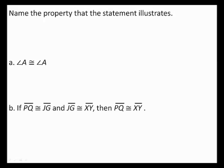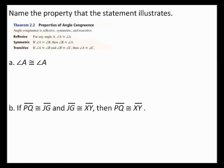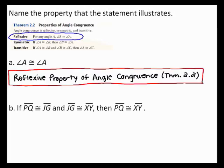In part A, the statement shows that an angle is congruent to itself — in this case, angle A is congruent to angle A. When you look at the list of properties of angle congruence given to you in this section, you can see that this statement resembles the reflexive property of angle congruence, which states that for any angle A, angle A is congruent to angle A. Therefore, this statement illustrates the reflexive property of angle congruence.